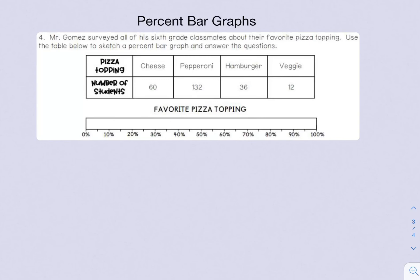Now we're going to create a percent bar graph. Mr. Gomez surveyed all of his sixth grade classmates about their favorite pizza topping. Use the table below to sketch a percent bar graph and answer the questions. We have four pizza toppings: cheese, pepperoni, hamburger, and veggies, each with a number of students associated with it. That means we're going to have to find a percent for each one.